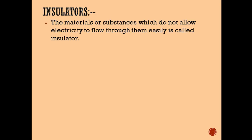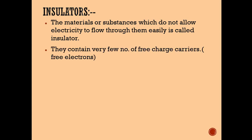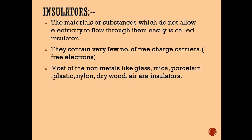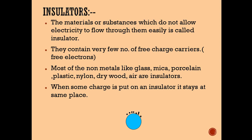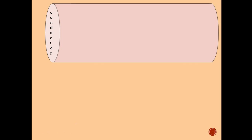An insulator is a material or substance which does not allow electricity to flow through it easily. Insulators contain very few free charge carriers. Most non-metals — such as glass, mica, porcelain, plastic, nylon, dry wood, and air — are examples of insulators. When some charge is put on an insulator, it stays at the same place, as shown in the figure.